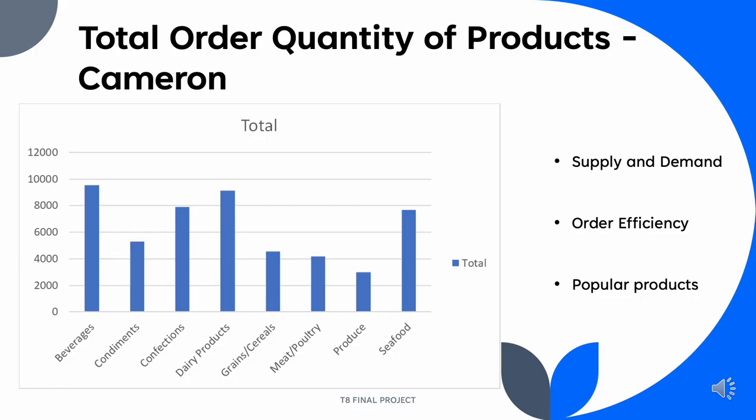My name is Cameron Stevenson. This is a graph of the amount of products that we order to ensure our groceries are in stock to be purchased by our customers. This graph of the order quantity of products allows our company to see which products are in higher demand and have more orders. This allows our company to adjust our supply and better anticipate the amount of products needed, so there is not a surplus of non-purchased products that go to waste. This is especially important for perishable products such as produce.